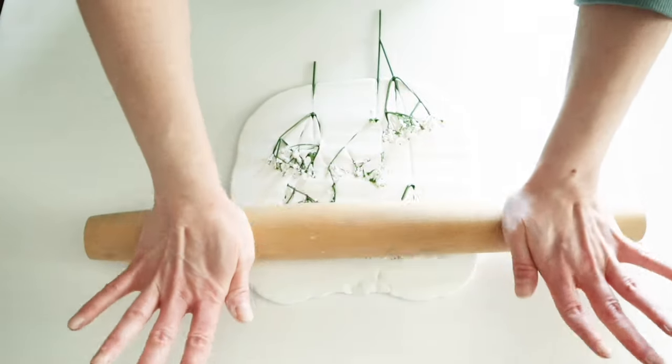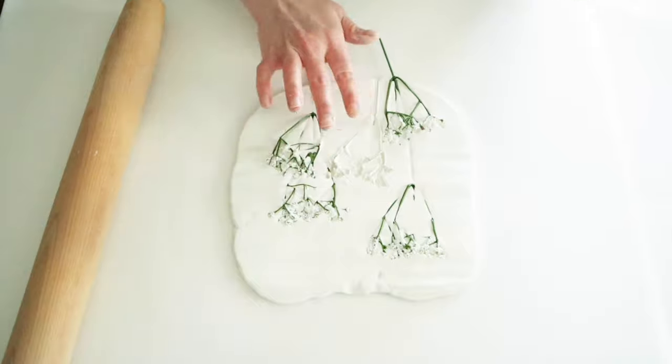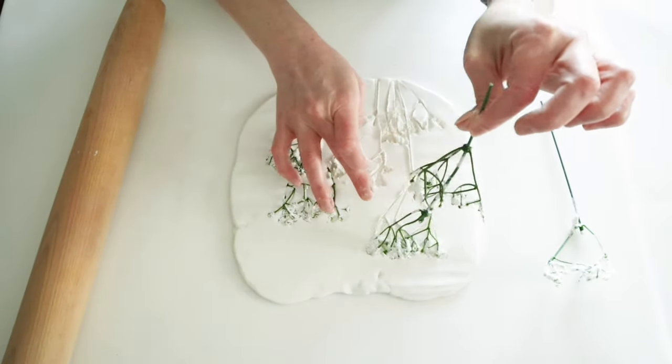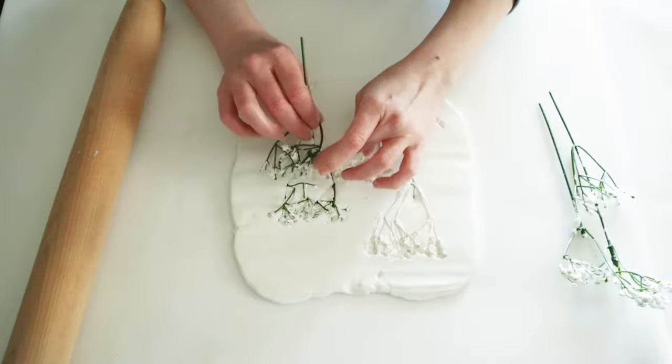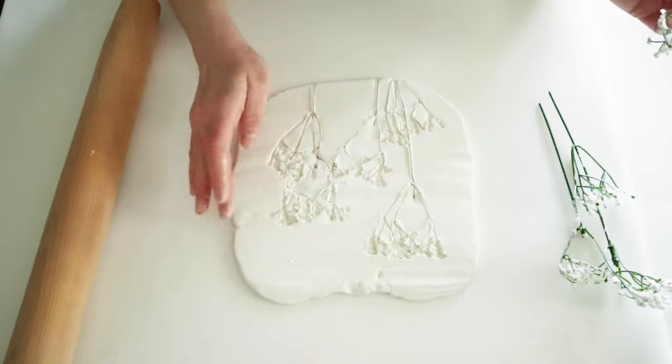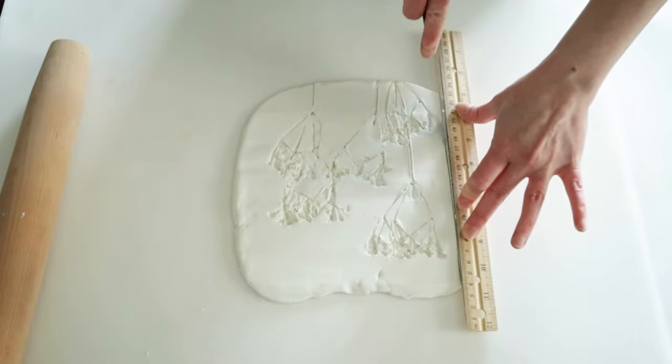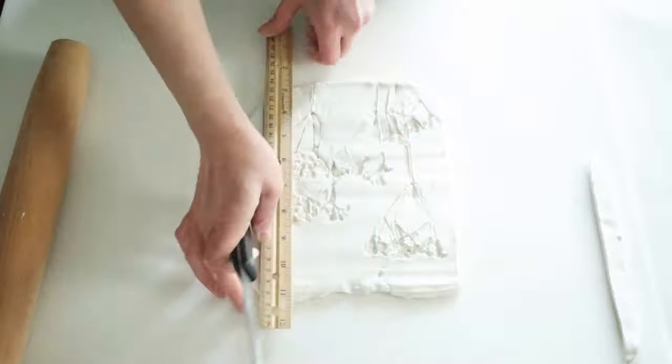After about three or four times, then I'm very gently going to pull these little baby's breaths up. You may have to help these along a little bit and kind of push the clay down as you're pulling them up, but then it leaves this cute little imprint on them. Then I'm just going to take a knife and my ruler, and I'm going to cut this down into a rectangle.